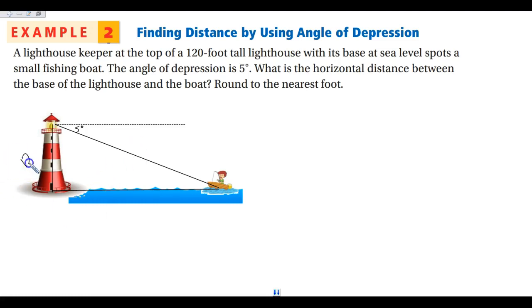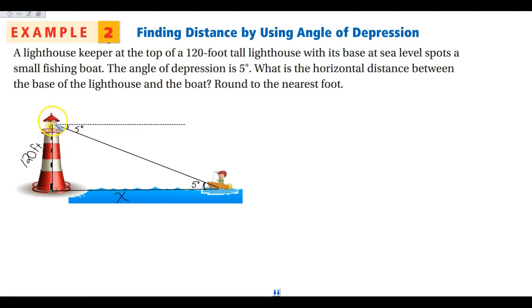This lighthouse is 120 feet tall, and I want to know the horizontal distance. Because these are both horizontal lines, they are parallel, so the angle of depression and angle of elevation are the same — the angle of elevation is five degrees. It is often easier to reverse it and use the angle of elevation. So if the angle of depression from the lighthouse to the boat was five degrees, then the angle of elevation from the boat to the lighthouse is also five degrees. One of the number one mistakes people make is trying to put the five degrees inside the triangle corner rather than outside the triangle — using angle of elevation makes you less likely to make that mistake.